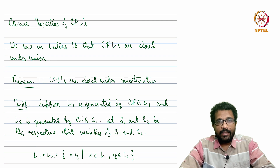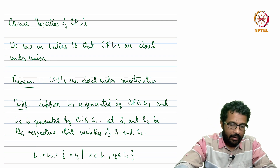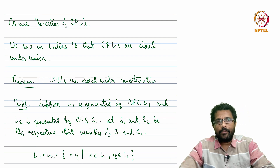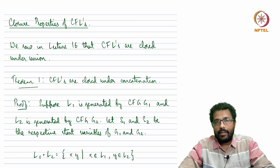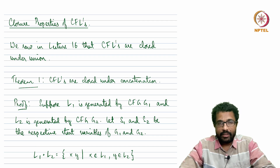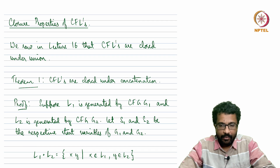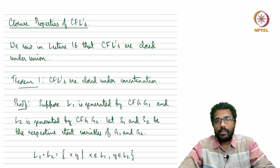Hello and welcome to lecture 19 of the course Theory of Computation. In this rather short lecture we will see closure properties of context-free languages. The previous couple of lectures we saw what context-free languages are, we saw the definition, examples, Chomsky normal form, and the CYK algorithm. In this lecture we will see some of the closure properties.